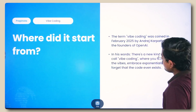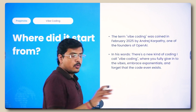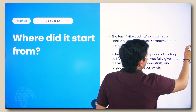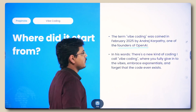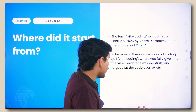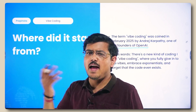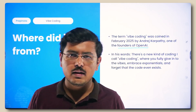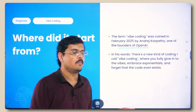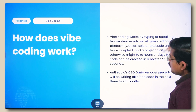Where did it start from? The term vibe coding was coined in February 2025 — very recently — by Andrej Karpathy, one of the founders of OpenAI, the company which built ChatGPT. He coined the term and said there's a new kind of coding where you fully give in to the vibes, embrace exponentials, and forget that the code even exists. In other words, you do not practically write the code — you tell an AI or LLM-based assistant to write it for you, and you just give the whole vision and vibe of what you want.